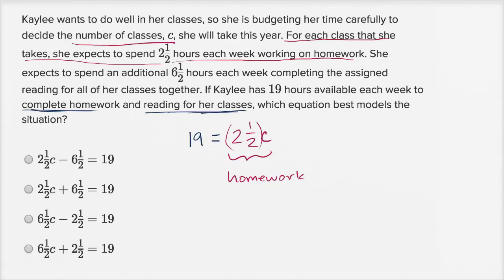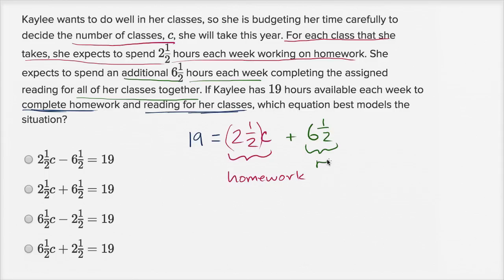And how much is she going to spend on reading? It says she expects to spend an additional 6½ hours each week completing the assigned reading for all of her classes together. So this sentence says it doesn't matter how many classes she takes, she's going to spend 6½ hours reading — it's not dependent on the number of classes. So the amount she spends on homework plus the amount she spends on reading need to add up to 19 hours.